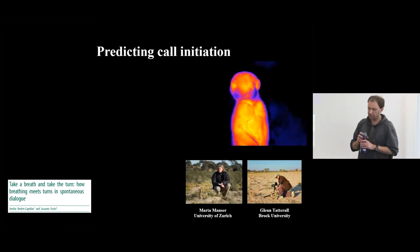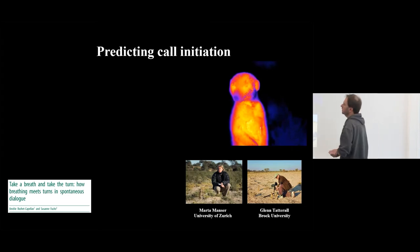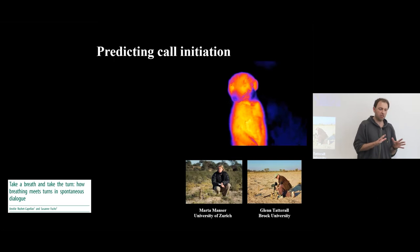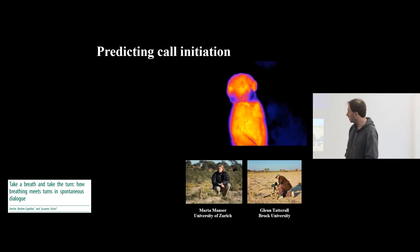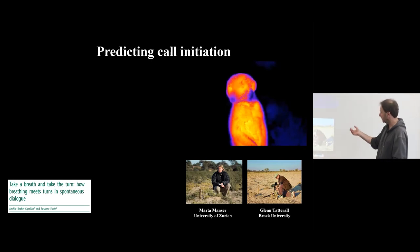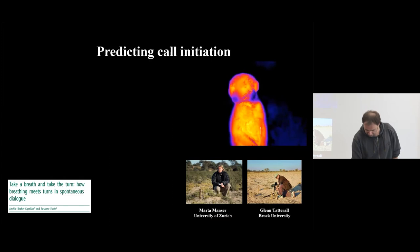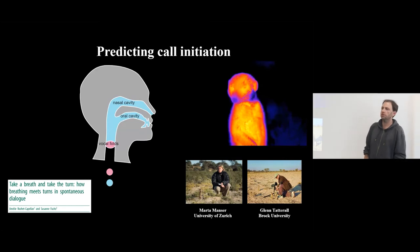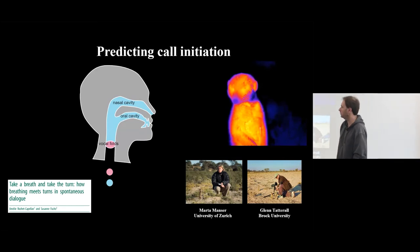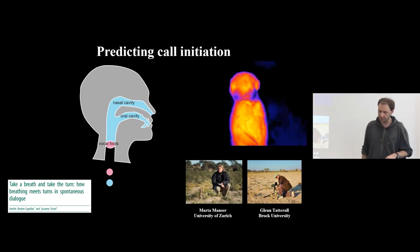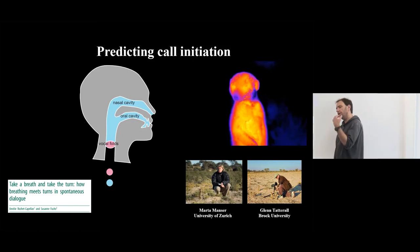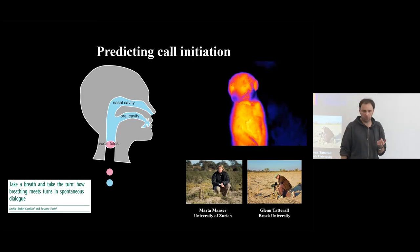Another topic I want to address deals with cues indicating the intention to produce a call — basically touching on how individuals coordinate and avoid overlapping the calls of others to smooth the interaction. This is done in collaboration with Marta Munster from Zurich and Glenn Tarasal. Most mammals produce calls on the exhale: to call, you first need to inhale, and then air is pushed from the lungs, powering the vocal folds to generate sound. Usually a slightly deeper inhale is needed to call, and in humans the depth often depends on the length of what you want to say.